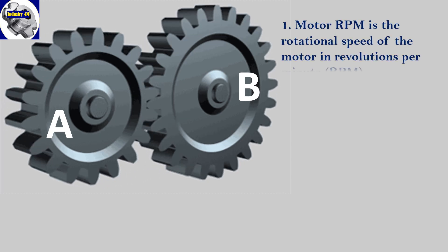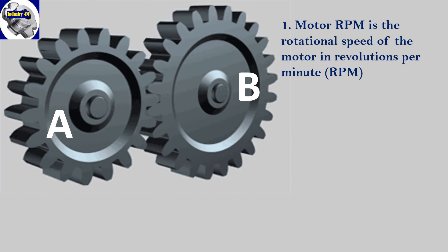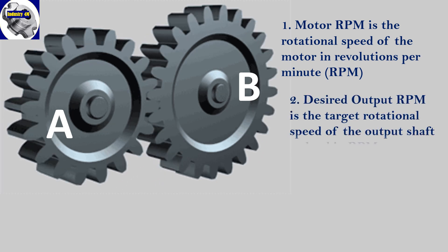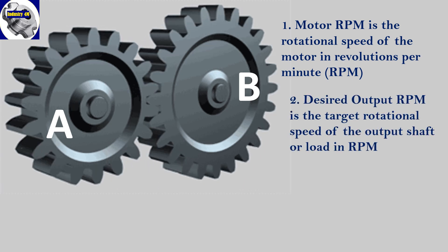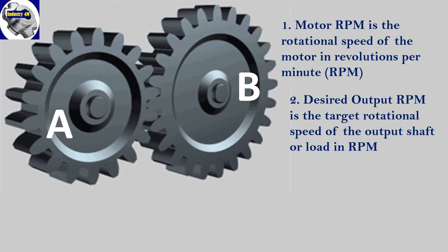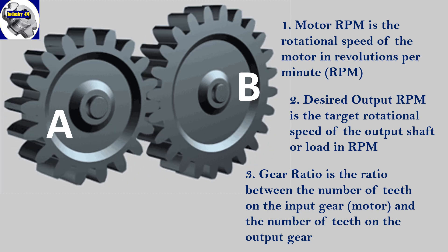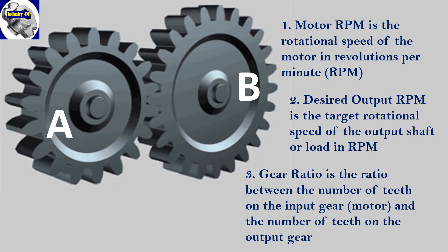Motor RPM is the rotational speed of the motor in revolutions per minute. Desired output RPM is the target rotational speed of the output shaft or load in RPM. Gear ratio is the ratio between the number of teeth on the input gear (motor) and the number of teeth on the output gear.